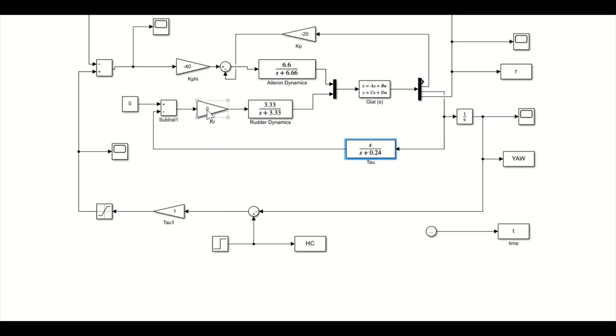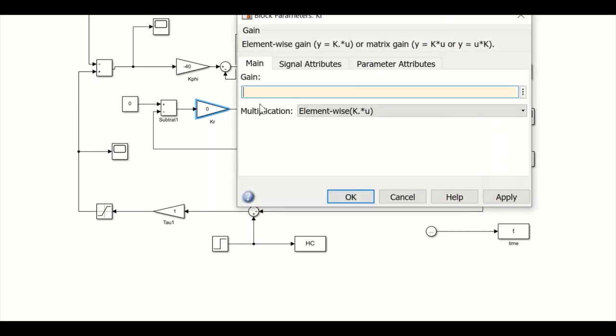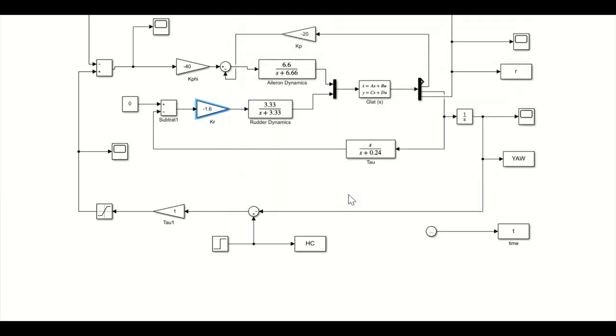What we're going to do is design the pole associated with the washout filter and the gain associated with the control system. Notice in this particular loop it's a negative gain as well, rather than a positive gain, because the transfer function this way is negative.